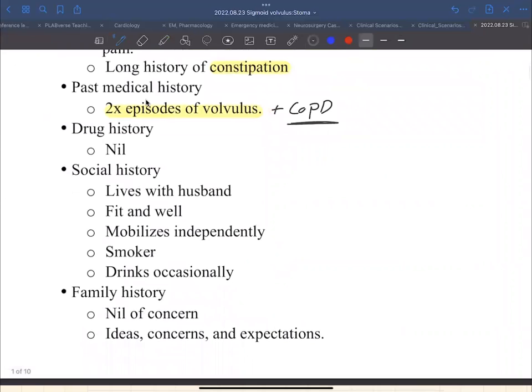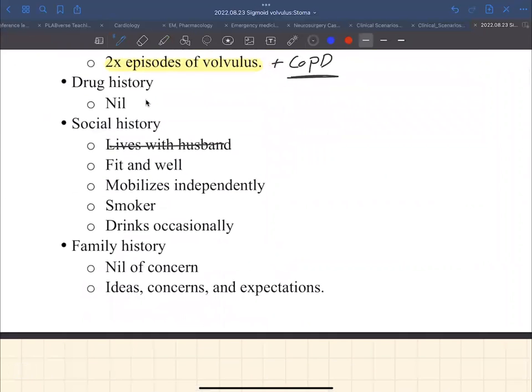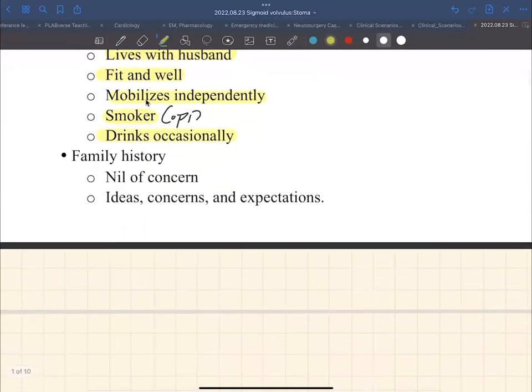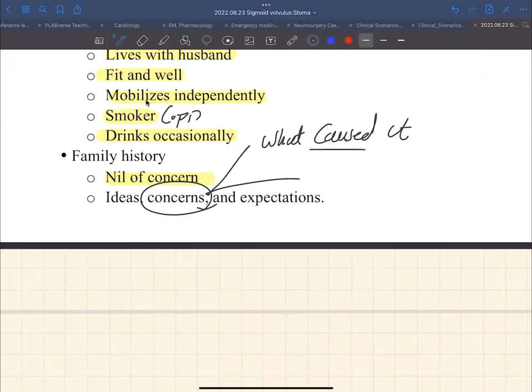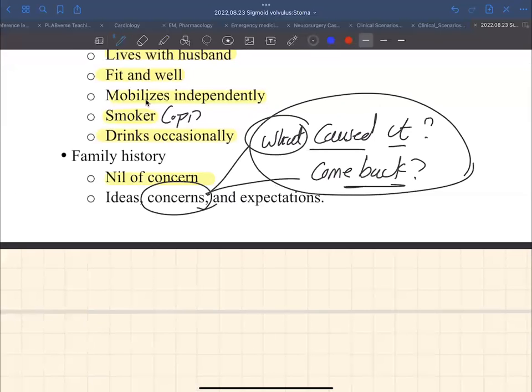So the presenting complaint is two to seven days, I mean, two days history of abdominal pain, prolonged history of intermittent abdominal pain, presented with nausea, vomiting, severe abdominal pain, and also long history of constipation. She has two episodes of volvulus before, and we added to that the COPD. Social history, she lives with her husband, and also she's fit and well. She doesn't have any medical condition, mobilized independently. She is a smoker. This is why she has COPD, and she drinks occasionally. Family history, nil of concern. You ask her about ideas, concerns, and expectations. Our patient had two concerns, and these concerns was what caused it, number one, and number two, is it likely to come back? Is it recurrent or not? And we need to answer the patient's concerns at the end of the consultation.